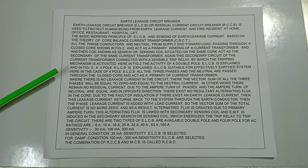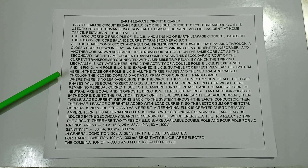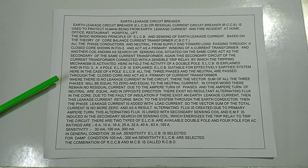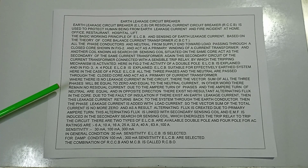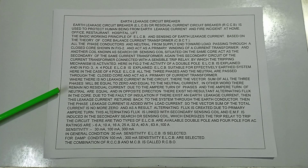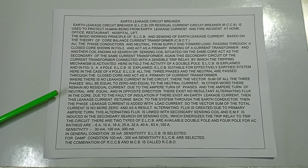ELCB is suitable for effectively earthed systems. In the case of a four-pole ELCB, all three phases and the neutral pass through the closed core and act as the primary of the current transformer. The ampere-turns of the phases and neutral are equal and opposite, so there is no resultant alternating flux in the core under normal conditions.